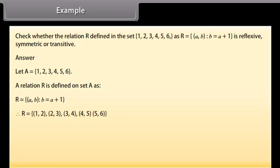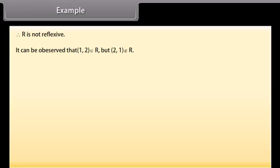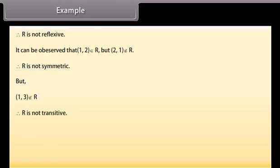We can find that (a, a) does not belong to R where a belongs to A. For instance, (1,1), (2,2), (3,3), (4,4), (5,5), (6,6) do not belong to R. Therefore, R is not reflexive. It can be observed that (1, 2) belongs to R but (2, 1) does not belong to R. Therefore, R is not symmetric. But (1, 3) does not belong to R. Therefore, R is not transitive. Hence, R is neither reflexive nor symmetric nor transitive.